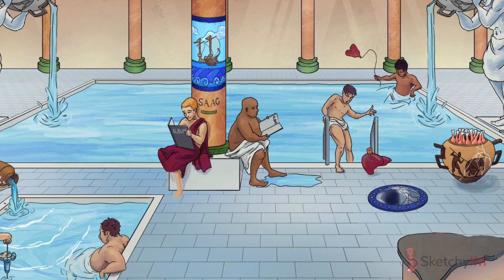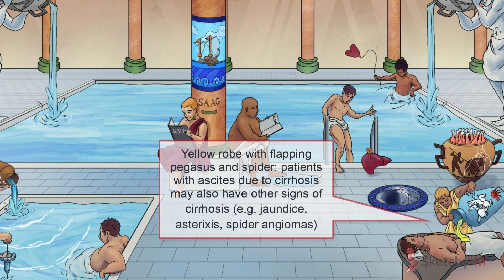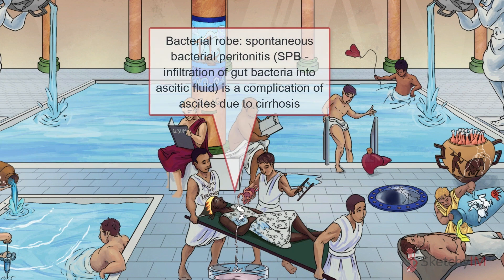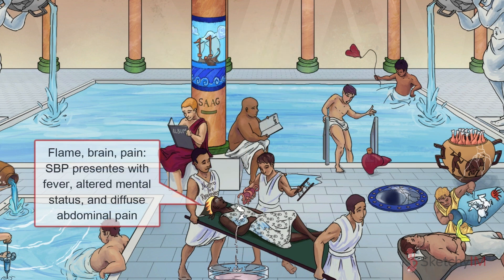In patients with ascites due to cirrhosis, expect to see other signs and symptoms of cirrhosis. Jaundice is a sign of the reduced synthesis capacity of the liver. Asterixis and altered mental status are signs of hepatic encephalopathy. And finally, palmar erythema, spider angiomas, gynecomastia, and impotence are signs of hyperestrogenism characteristic of cirrhosis. For a more complete picture, head over to the cirrhosis sketch. A paracentesis will typically reveal ascitic fluid that's translucent and yellow.